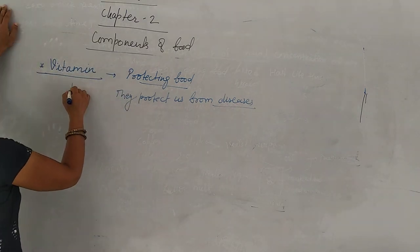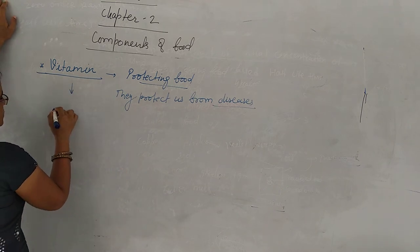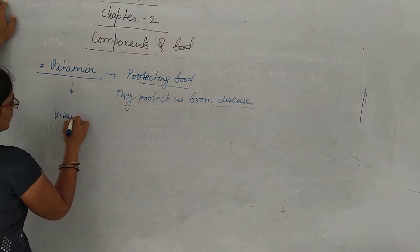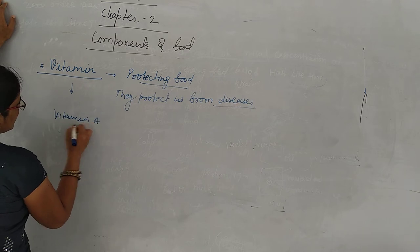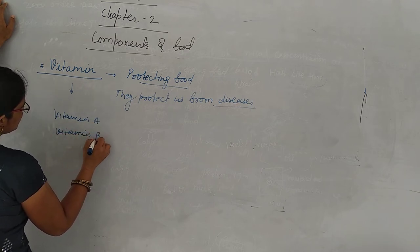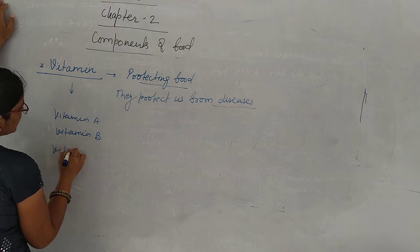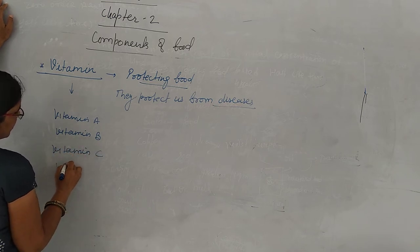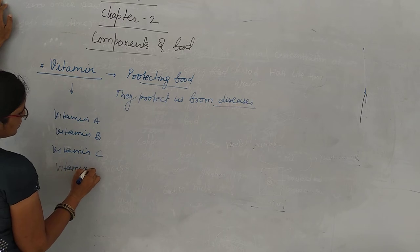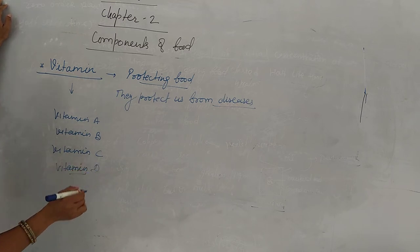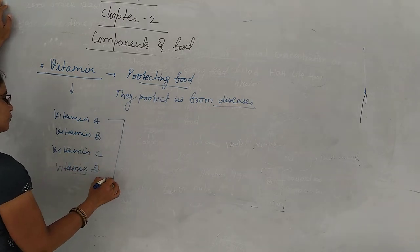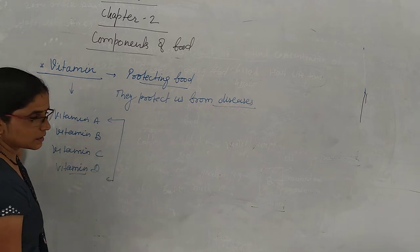Vitamins are generally 5 types of vitamins. Vitamin A, Vitamin B, Vitamin C, Vitamin D and Vitamin E also. But in your class we will discuss 4 vitamins. Is that clear?